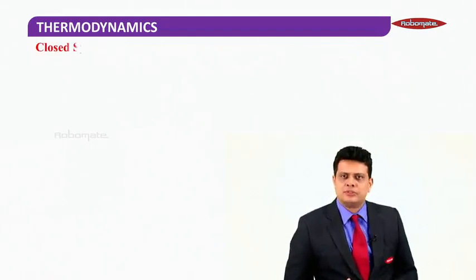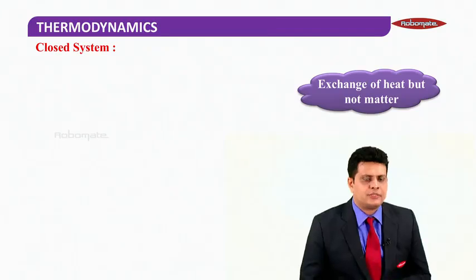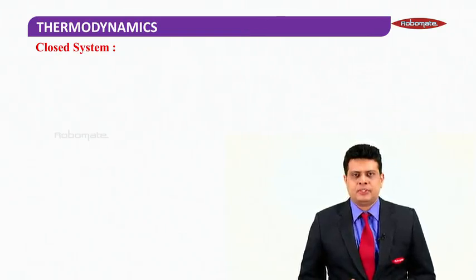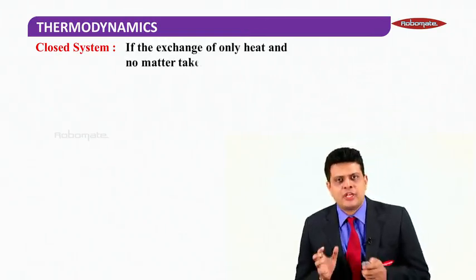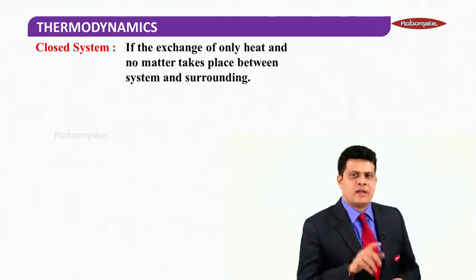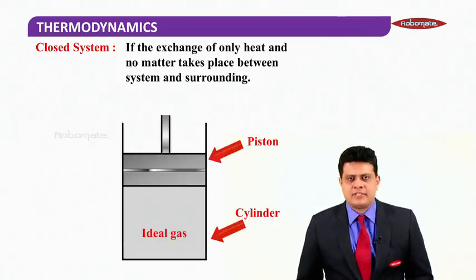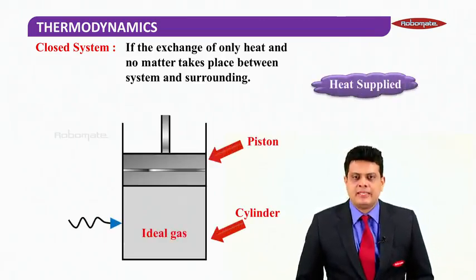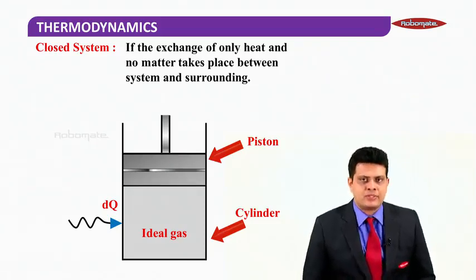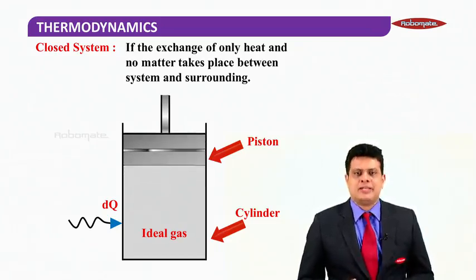A closed system is one in which there is only exchange of heat but not matter — absolutely no matter is exchanged. If the exchange is only heat energy but not matter between the system and surroundings, we call it a closed system. In a cylinder with a piston containing ideal gas, when you supply heat energy only heat energy is exchanged between the system and surroundings, not matter. Work is done but no matter has been exchanged.